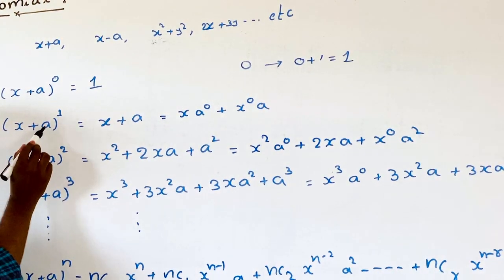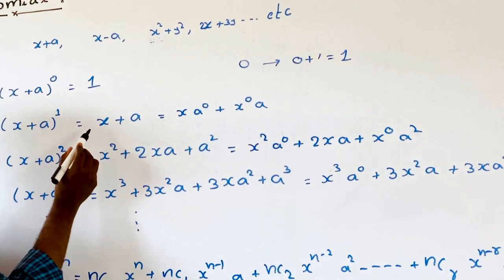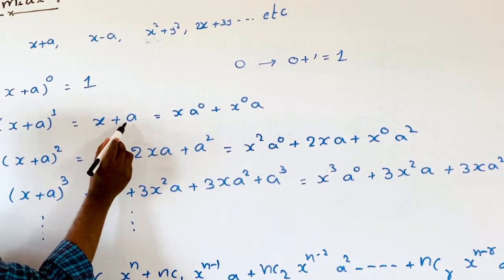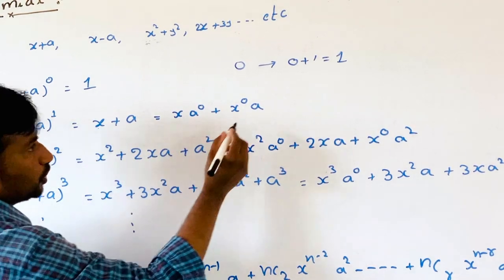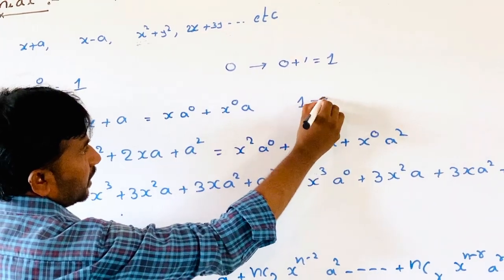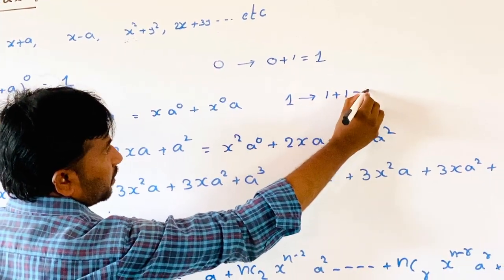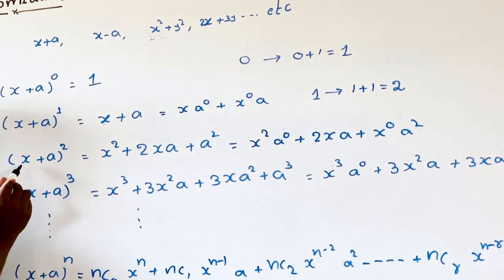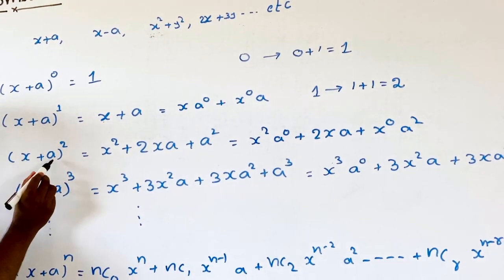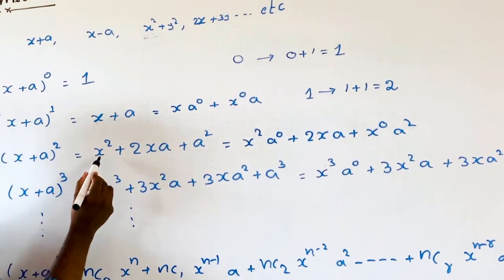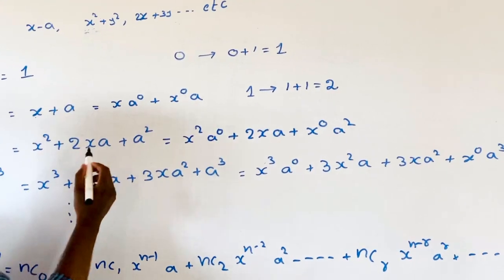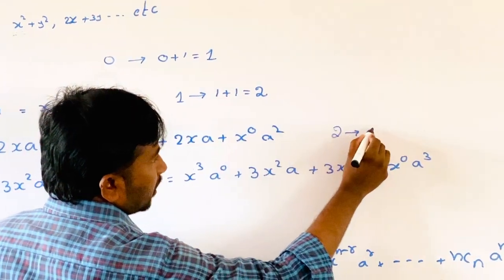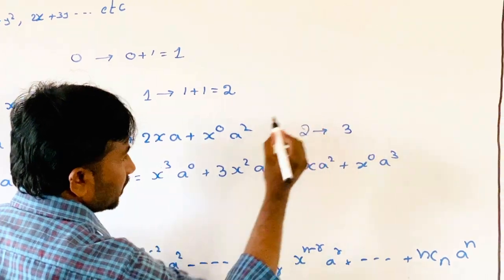In the expansion of (x+a) whole power 2, the number of terms is 1, 2, 3 — meaning index is 2 and number of terms is 3.